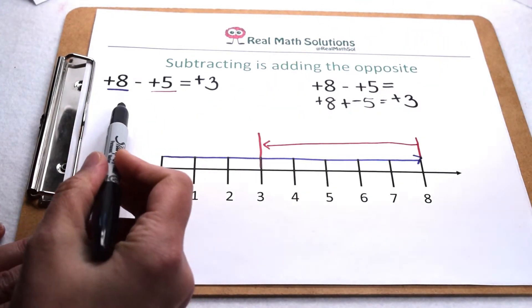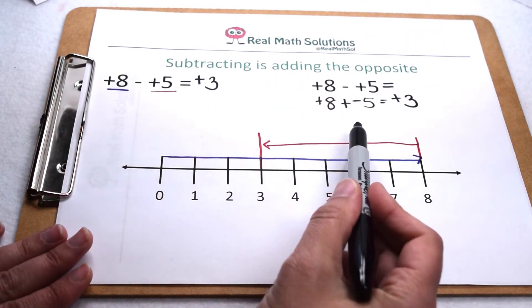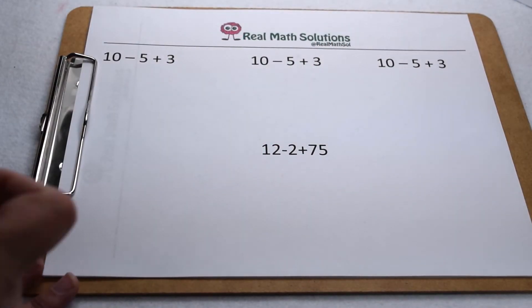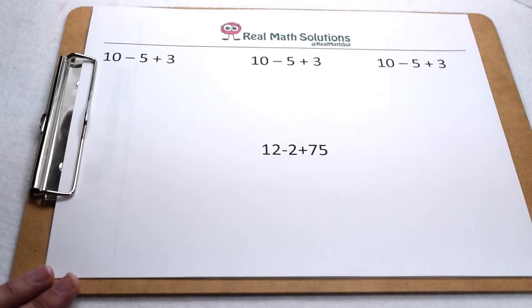So subtracting gave us the same result as adding the opposite did. In order of operations, if order matters, let's try testing out the same problem three different ways.